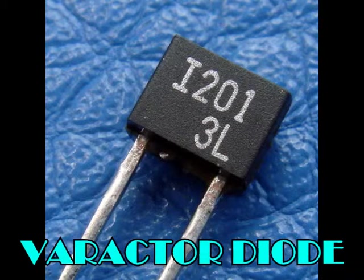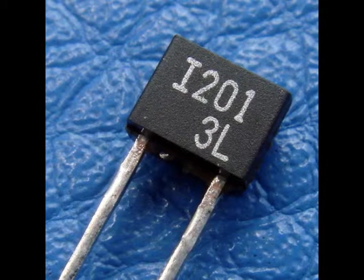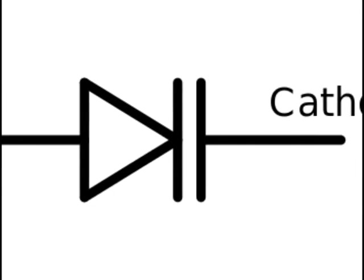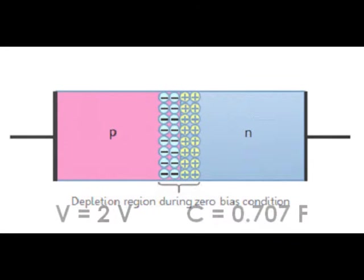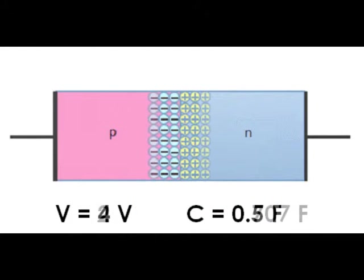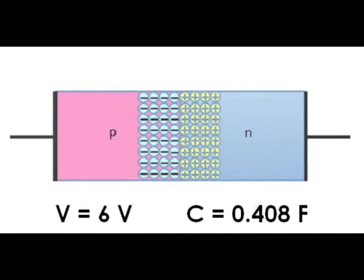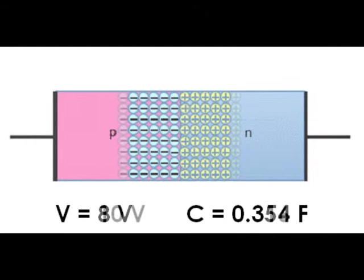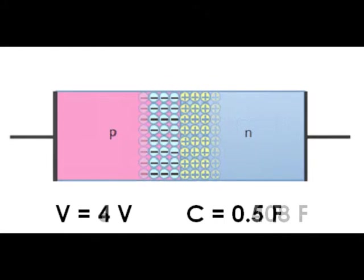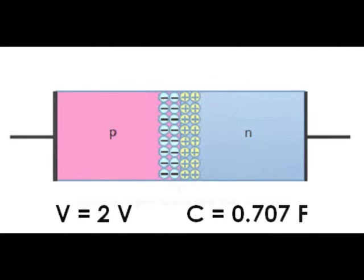A varactor diode is a type of diode which has a variable capacitance. It is operated under reverse biased condition, hence no current flows. However, since the thickness of the depletion zone varies with the applied bias voltage, the capacitance can vary. In other words, the capacitance is inversely proportional to the square root of the voltage applied to the diode.